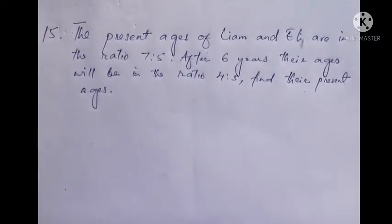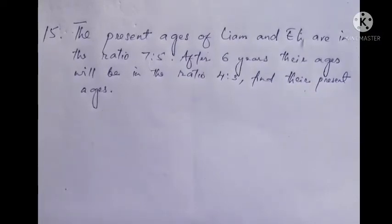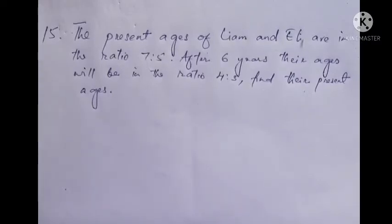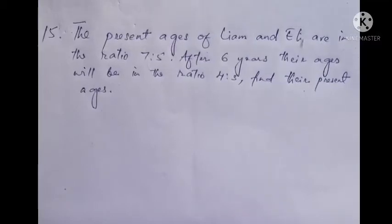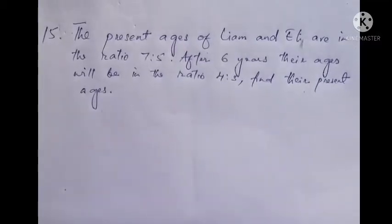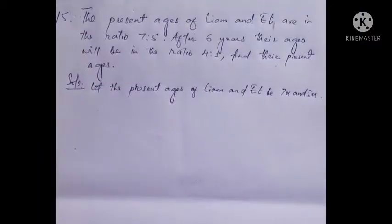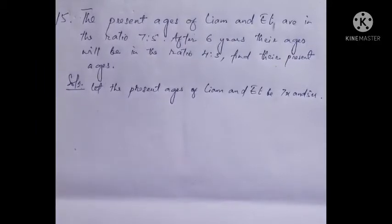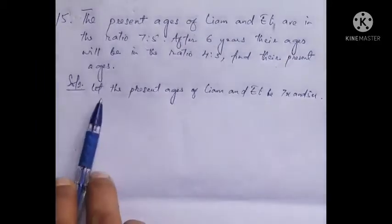Let the present ages of Liam and Eli be in the ratio 7 is to 5.